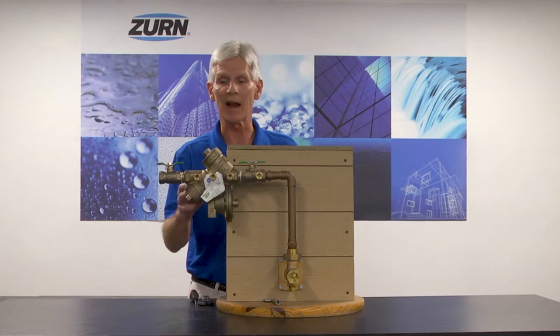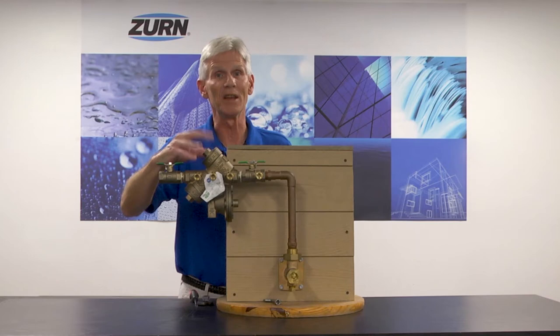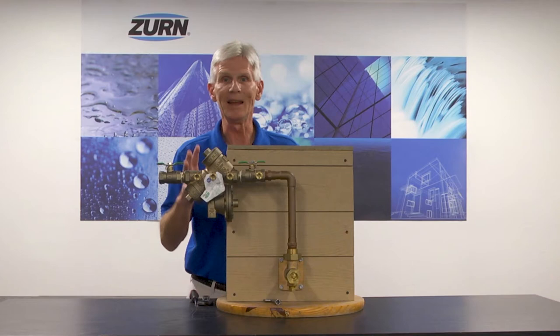So in this particular video, what we're going to do is clean the number one check of a three-quarter inch model 975XL2. Now again, this is a reduced pressure principle assembly. We have found through our diagnosis that the number one check of this valve is fouled, and that's what's causing the relief valve discharge.